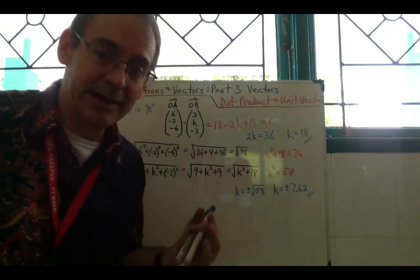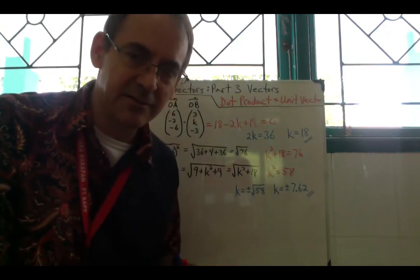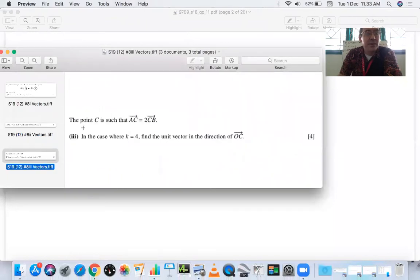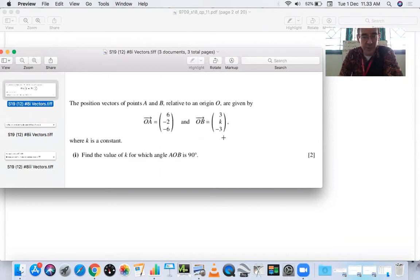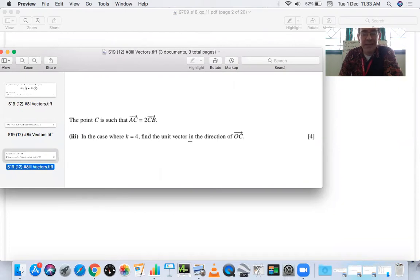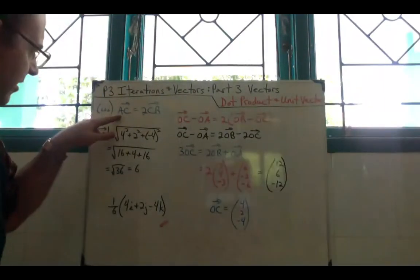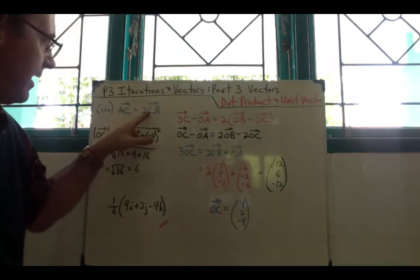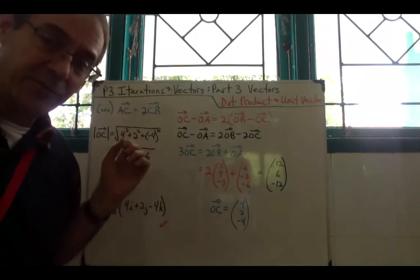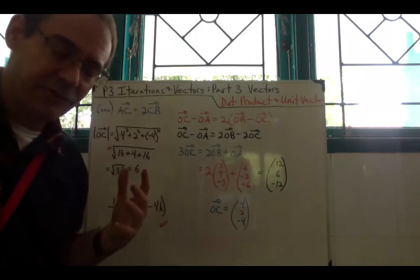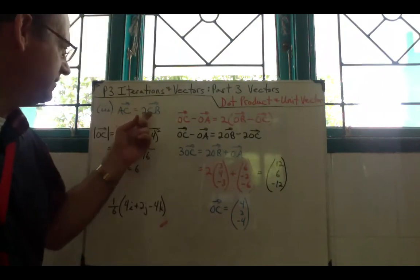Now for the third part: point C is such that AC = 2·CB, and in the case where K = 4, find the unit vector in the direction of OC. With K = 4, OB = (3, 4, -3). At first this looks confusing — how do you get OC from AC and CB? Break it down into component vectors.